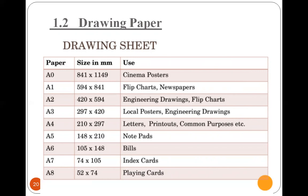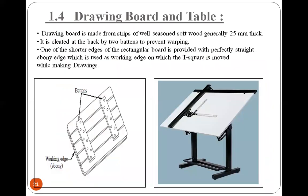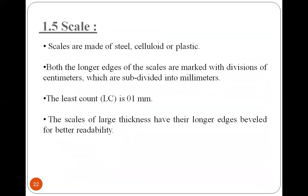The drawing board is used to fix the mini drafter, and the drawing sheet is mounted on it with the help of drawing pins. The scale is made up of steel, celluloid, or plastic. Both the longer edges of the scale are marked with divisions in centimeters, subdivided into millimeters. The least count is 1 millimeter.